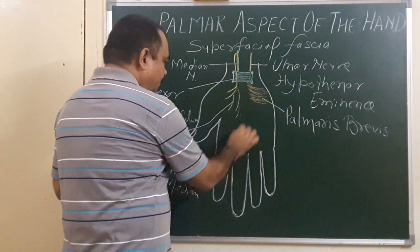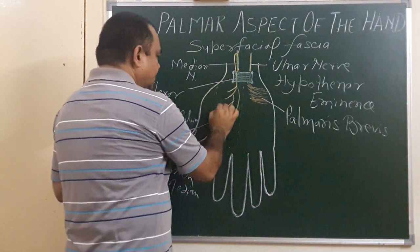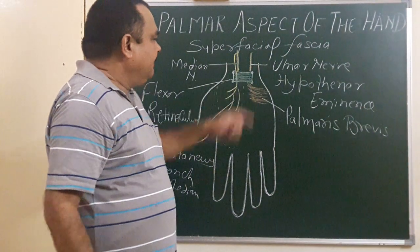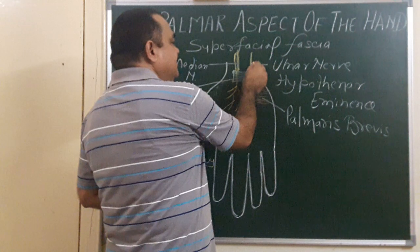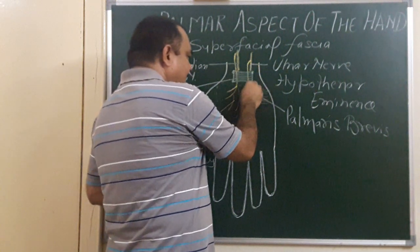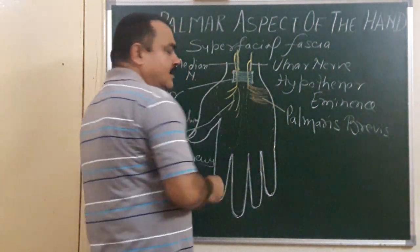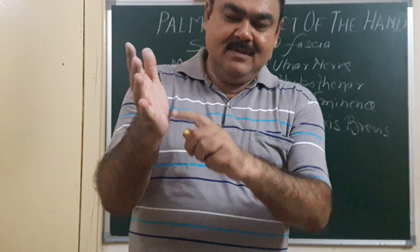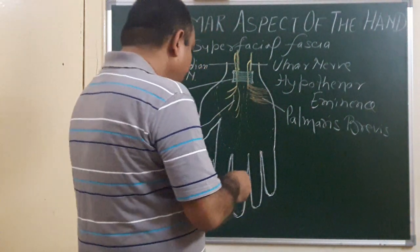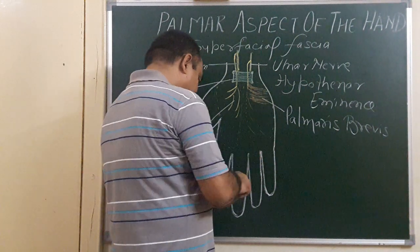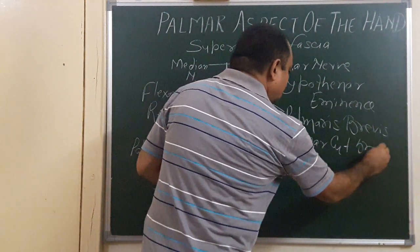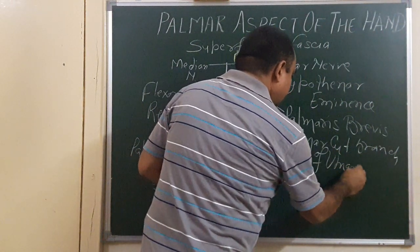So this portion — from here to here — is supplied by the palmar cutaneous branch of the median nerve. And here on the medial side, there is one branch that is the palmar cutaneous branch of the ulnar nerve. It gives supply to the medial one-third of the hollow of the palm and the skin over the hypothenar eminence. So this area is supplied by the palmar cutaneous branch of the ulnar nerve.